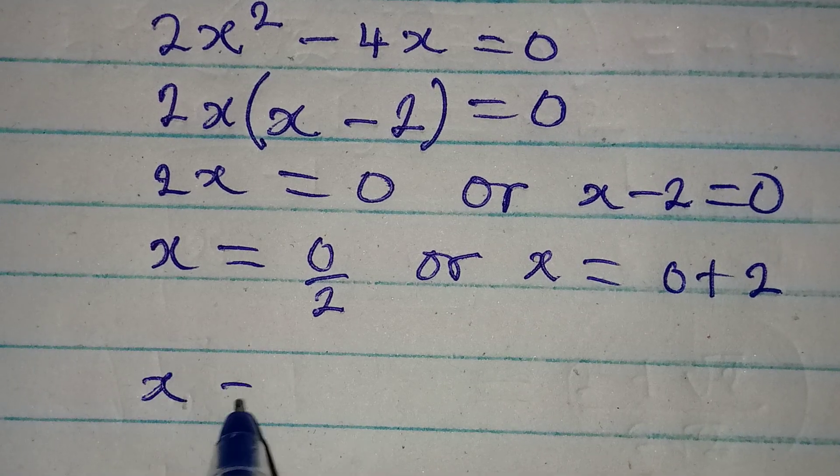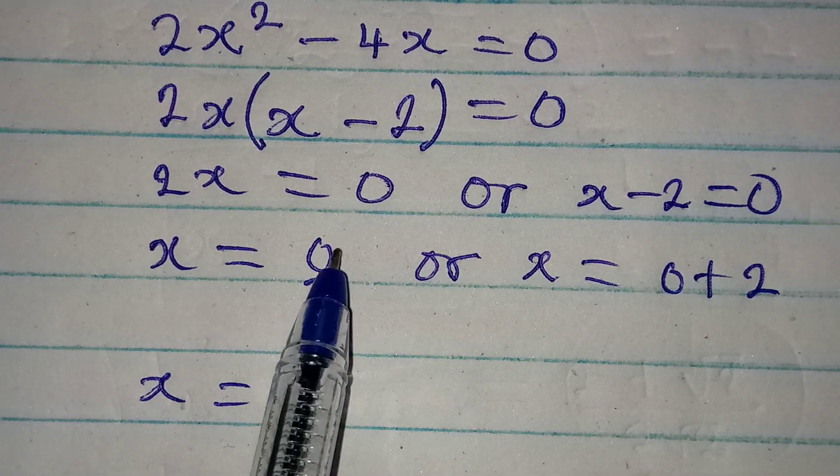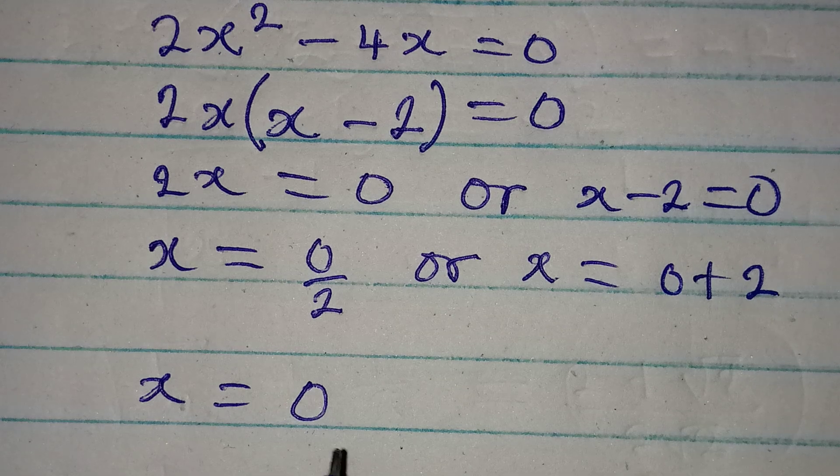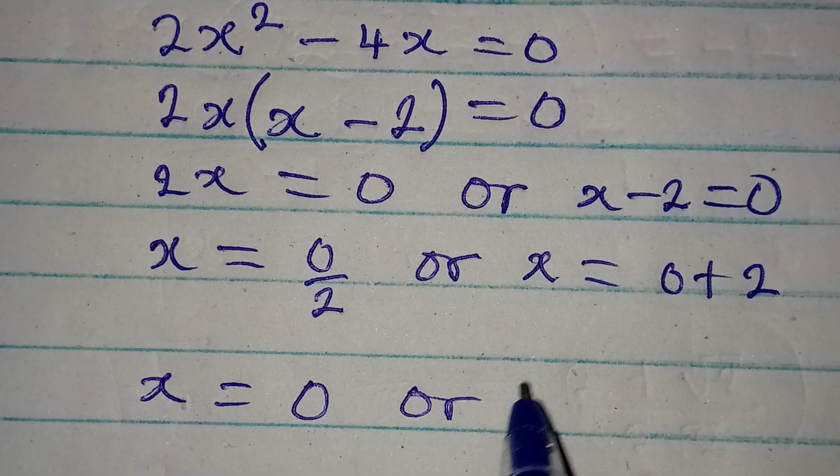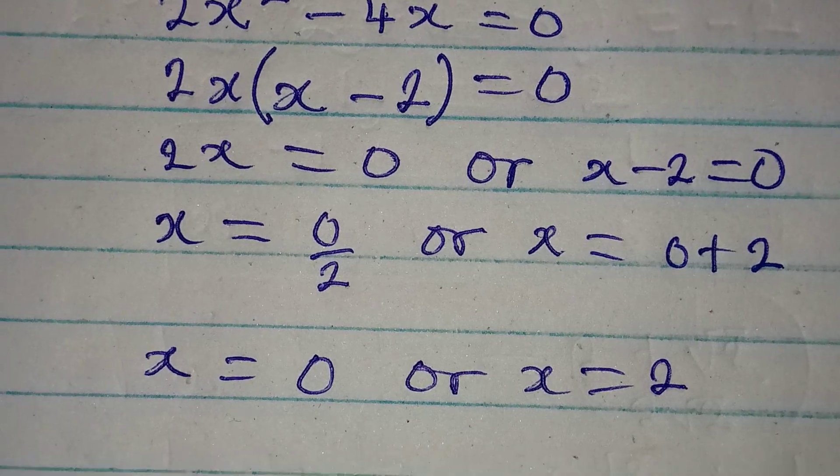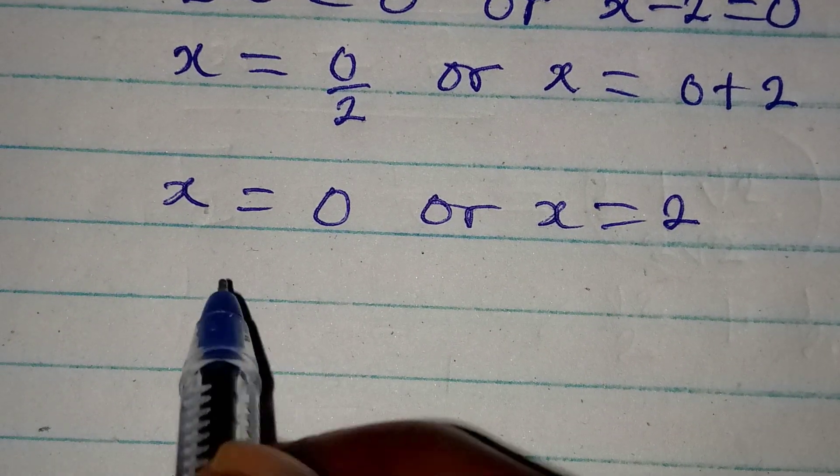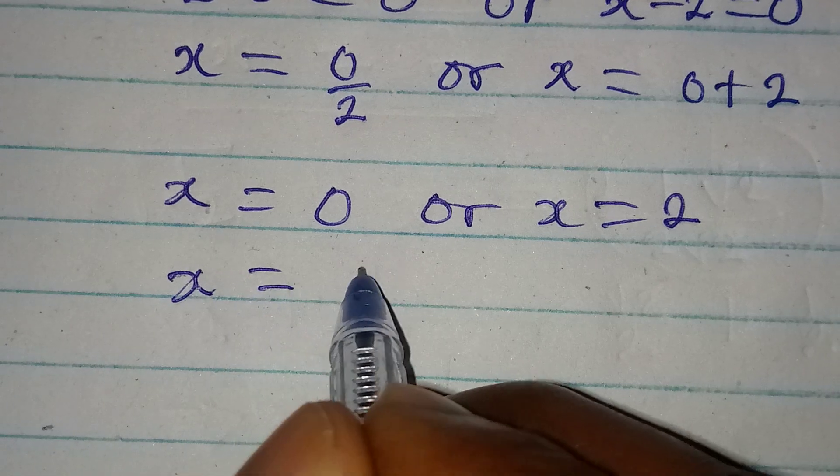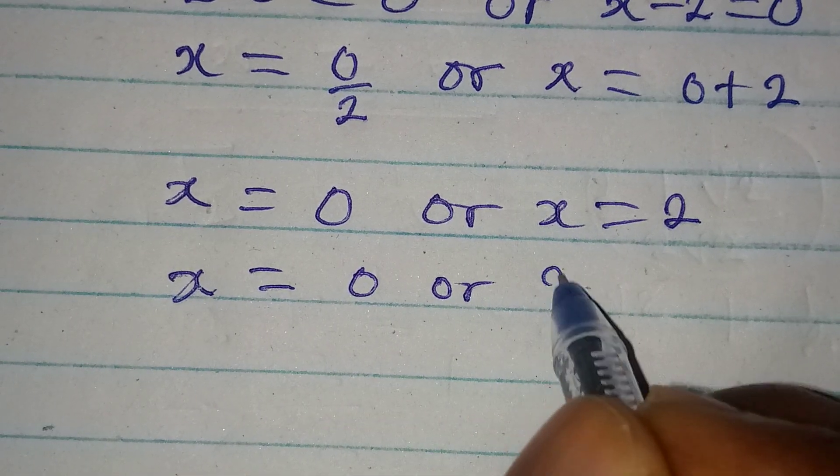Then x is equal to 0 because 0 divided by 2 is possible and it gives 0. Or on this side, x is equal to 2. So if we bring the two solutions together, x will be equal to 0 or 2.